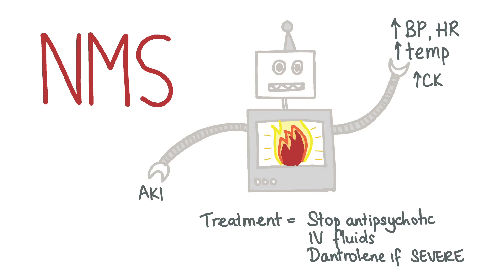After initiation of antipsychotics, watch out for signs and symptoms of neuroleptic malignant syndrome. This is rare but serious, characterised by pyrexia, muscle rigidity, autonomic lability causing tachycardia, tachypnoea and hypertension, as well as agitation and delirium. CK is usually raised and AKI may develop secondary to rhabdomyolysis. NMS is managed by stopping the antipsychotic and starting IV fluids and dantrolene in severe cases. Bromocriptine, which is a dopamine agonist, may sometimes be used as well.